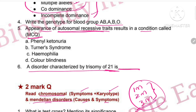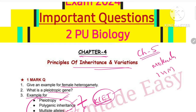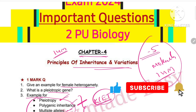So this is all about Principles of Inheritance and Variations. In the next video, I will cover chapter number 5, which is also a highly important chapter — Molecular Basis of Inheritance — which also carries 14 marks. Important questions for that chapter will be shared in the next video. Do subscribe to the channel and share with your friends as much as possible. Thanks for watching, my dear students. All the best!